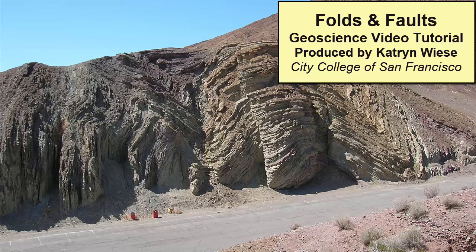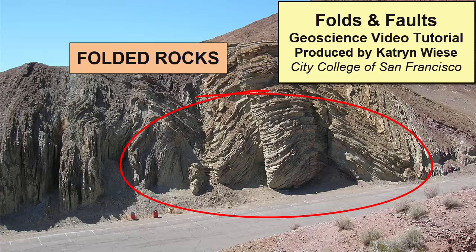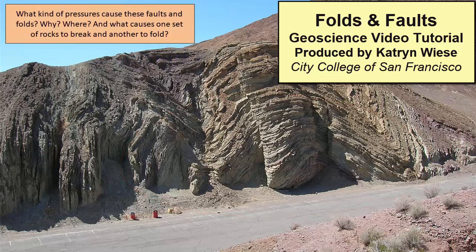When we observe rocks around the Earth, we can often see surfaces along which rocks have broken and moved, surfaces we call fault planes, or we can see layers of rock that have folded. What kind of pressures cause these faults and folds? Why? Where? And what causes one set of rocks to break and another to fold?